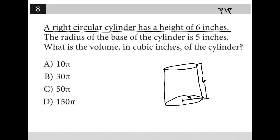What is the volume, in cubic inches, of the cylinder? So the volume of a right circular cylinder is equal to pi r squared h.